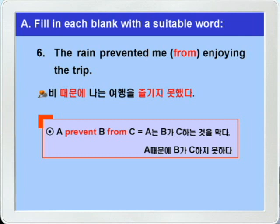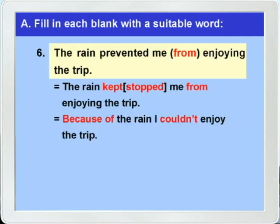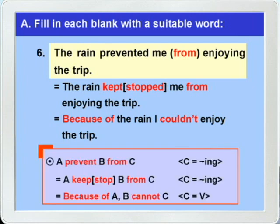prevent 대신에 keep이나 stop을 써도 되죠. 과거니까 kept, stopped 이렇게 된 것입니다. 그리고 비 때문에 여행을 즐기지 못한 것이니까 '뭐뭐 때문에' 의미를 가진 'because of'와 '뭐뭐할 수 없다' cannot을 쓰면 되는데, 여기서는 과거니까 couldn't가 나온 것입니다. 다 이해하셨으리라 믿습니다. 다음 7번으로 가죠.